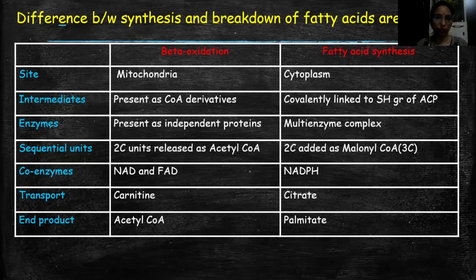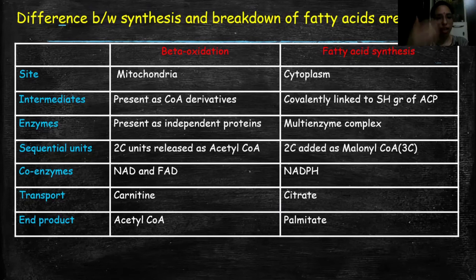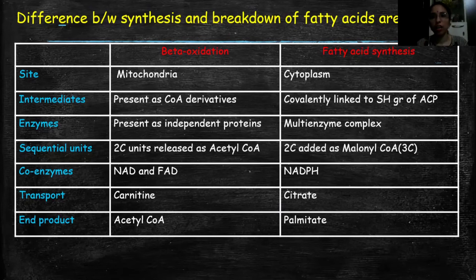That transport molecule is carnitine. When fatty acid oxidation starts, acyl-CoA is first made in the cytosol. Since acyl-CoA cannot cross the mitochondrial membrane on its own, we need to transport it from the cytosol to the mitochondria. Carnitine joins with the acyl-CoA, carries it into the mitochondria, and then detaches from acyl-CoA inside the mitochondria.